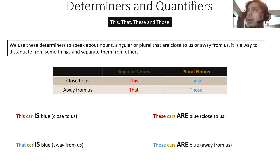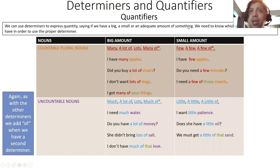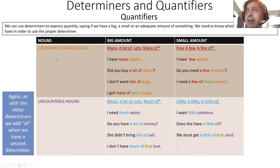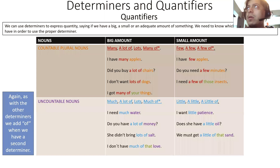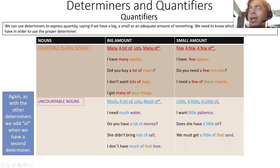So that will be it for determiners. Now we're going to move on to something a little different, which is quantifiers. I told you we were going to be checking determiners and quantifiers, and both of them are very similar. Quantifiers are a type of determiner. How do you use them? Again, you need to pay attention to the nouns. We have countable nouns and we have uncountable nouns. If we have a countable noun, we're going to use a specific determiner; if uncountable, a different one.